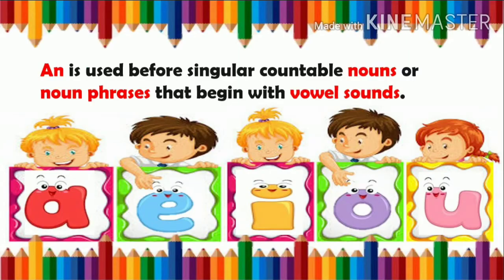Now we are going to learn about the second article — AN. AN is used before singular countable nouns or noun phrases that begin with vowel sounds. And as you know, children, the English alphabet includes five special letters called vowels. These letters are A, E, I, O and U.